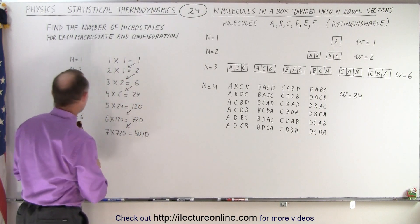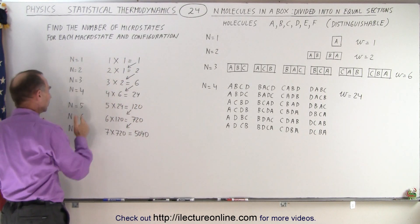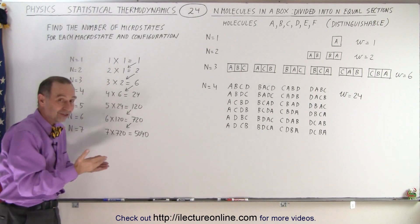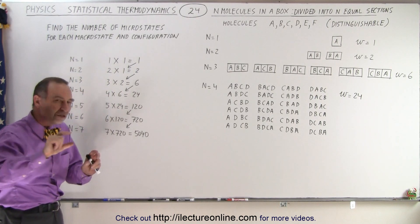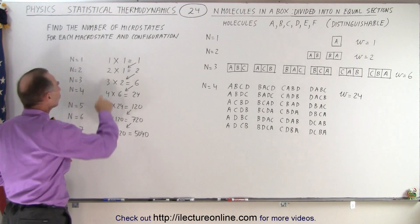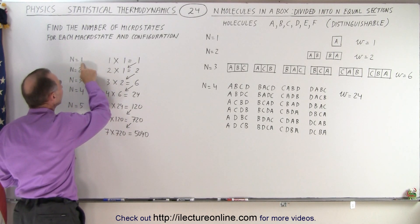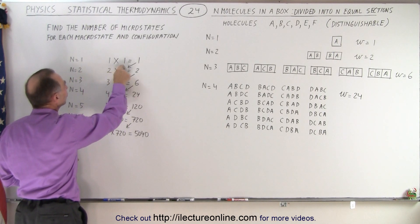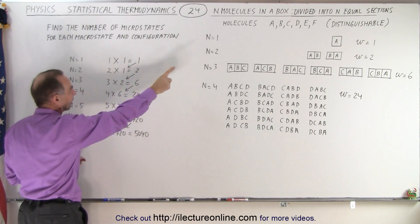So here is that pattern. We have n going from 1 all the way to 7, so we end up with seven partitions at the end. One molecule in each of the seven partitions. What's the number of microstates? Notice the number of microstates is n times—n being 1, times 1 equals 1 for the first case.